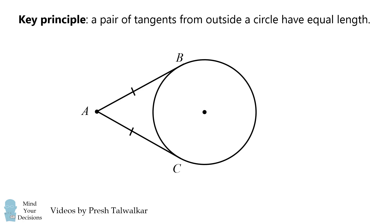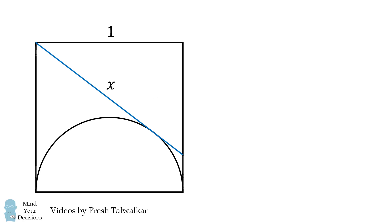Let's use this principle to solve the problem in this video. We're going to construct some external tangents to the semicircle. First consider the upper left corner of the square. This is tangent to the semicircle, and its length is the side of the square, so its length will be 1.